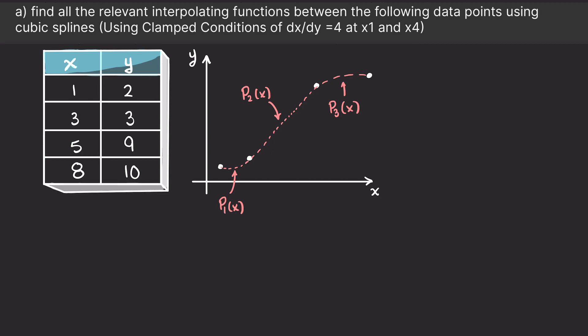Here we have a set of data points representing the growth of a plant over time. Our goal is to interpolate a smooth curve that accurately represents the growth pattern between these supplied discrete data points. As you can see, we have four data points, and our task is to find the clamped cubic spline that passes through these data points.